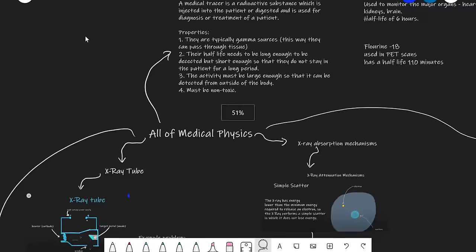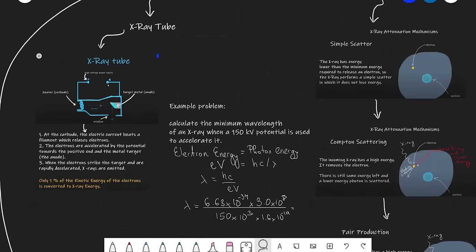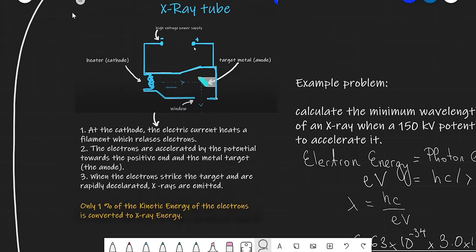Our first focus will be the x-ray tube. So how does an x-ray tube actually work? We need a high voltage power supply on the order of maybe even hundreds of thousands of volts, and that is connected to a heater element which will accelerate electrons. The electrons are going to be hitting a target. This whole apparatus is encased with a little window where x-rays emerge from the target when the electrons are decelerated.